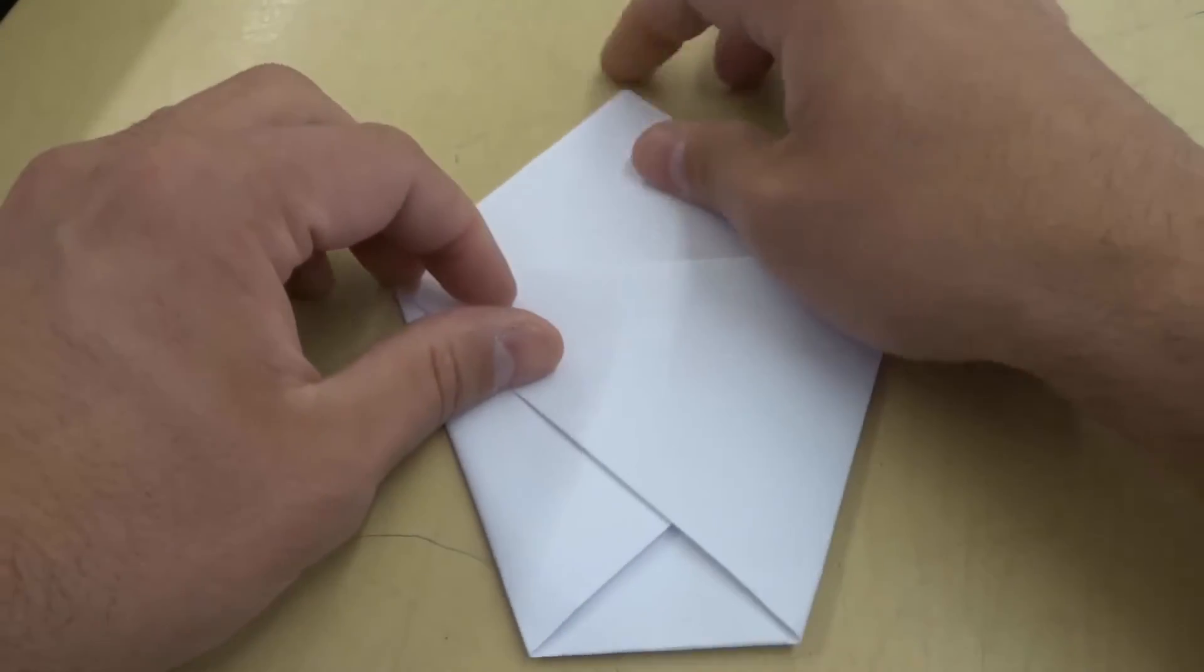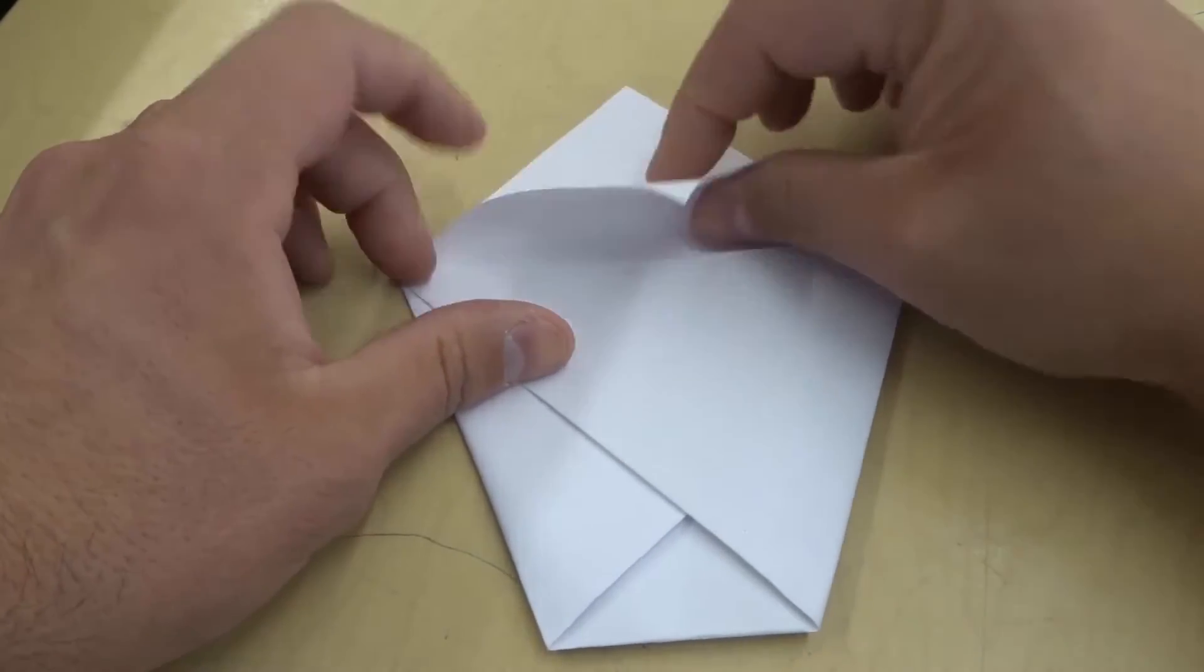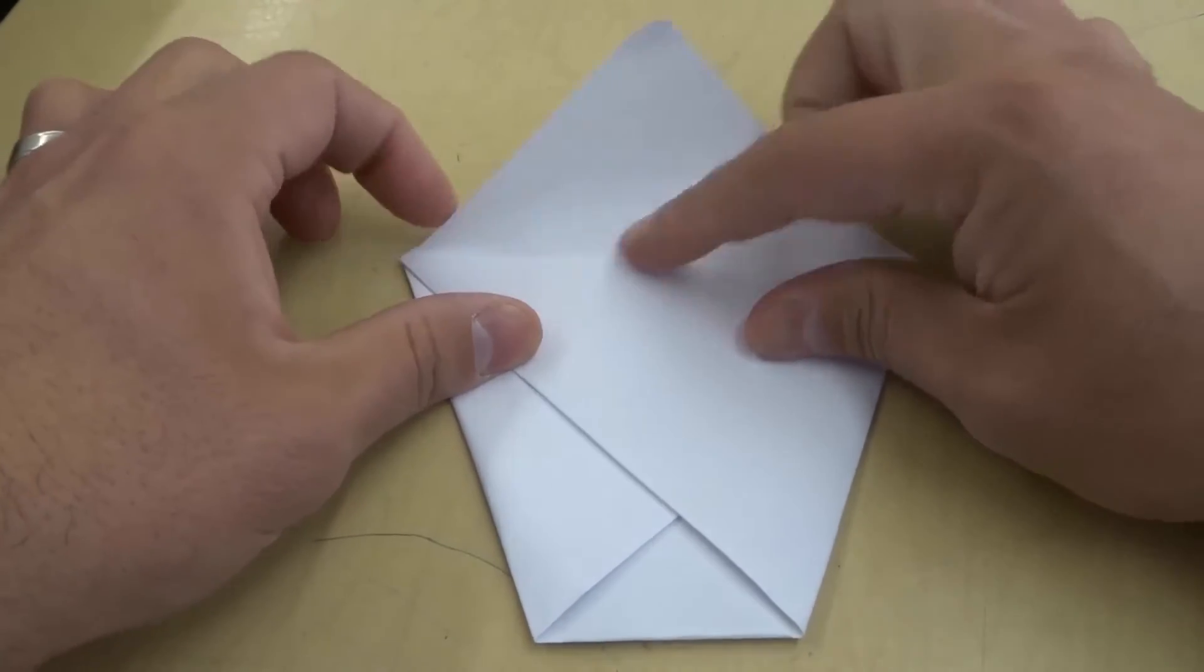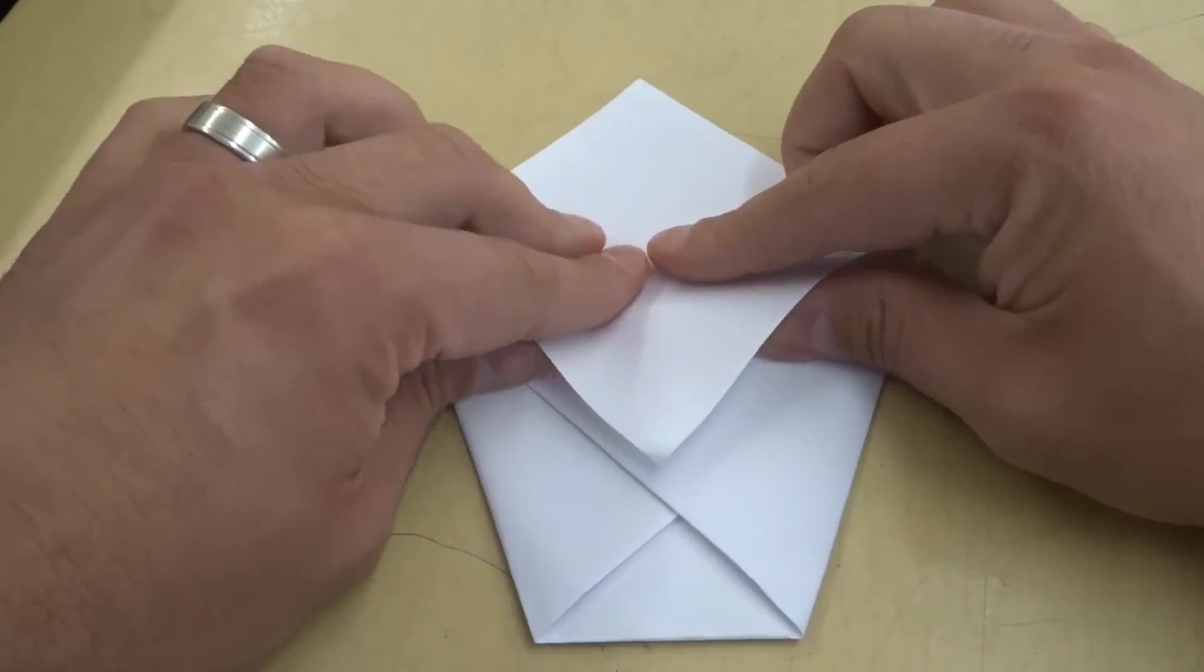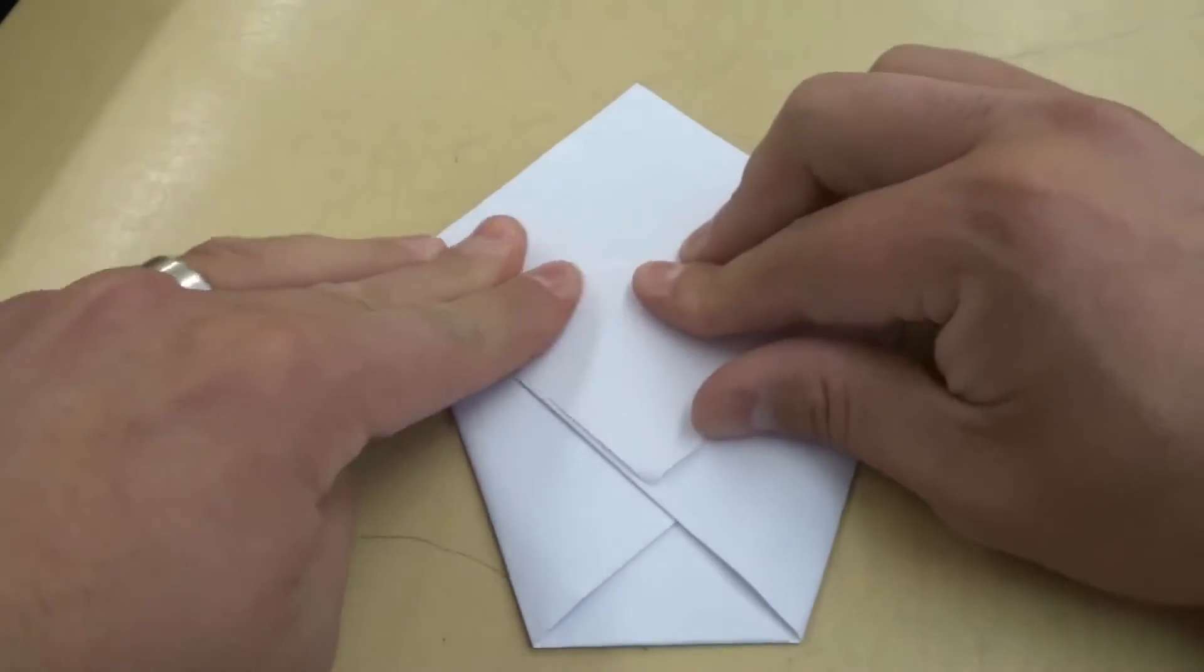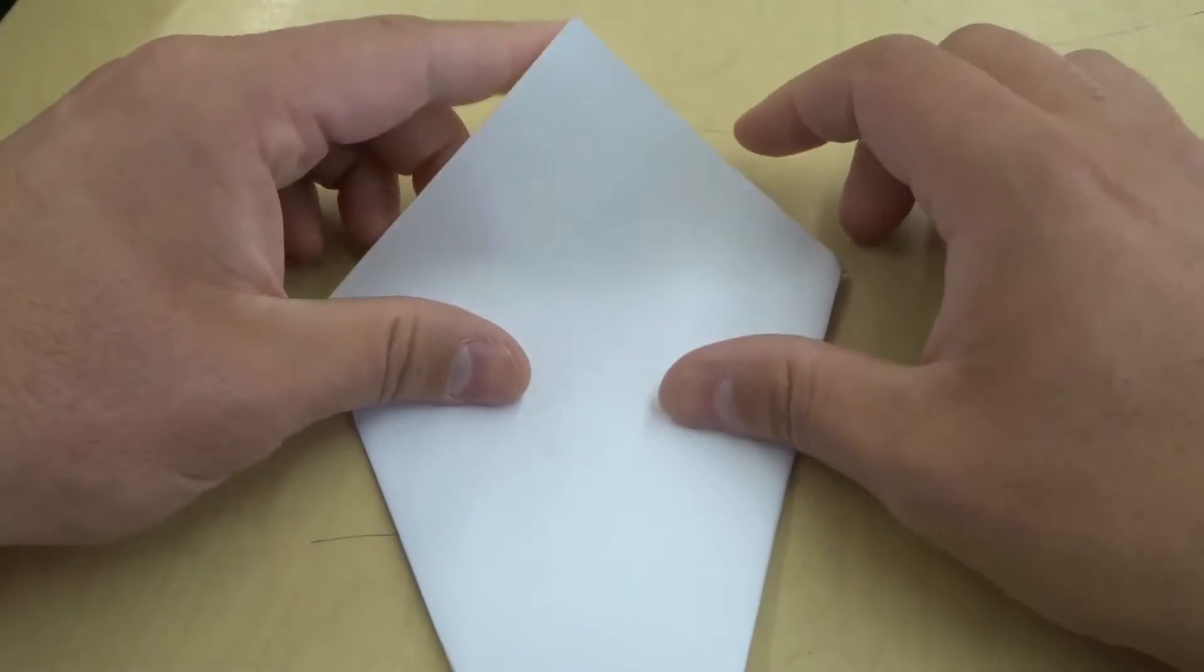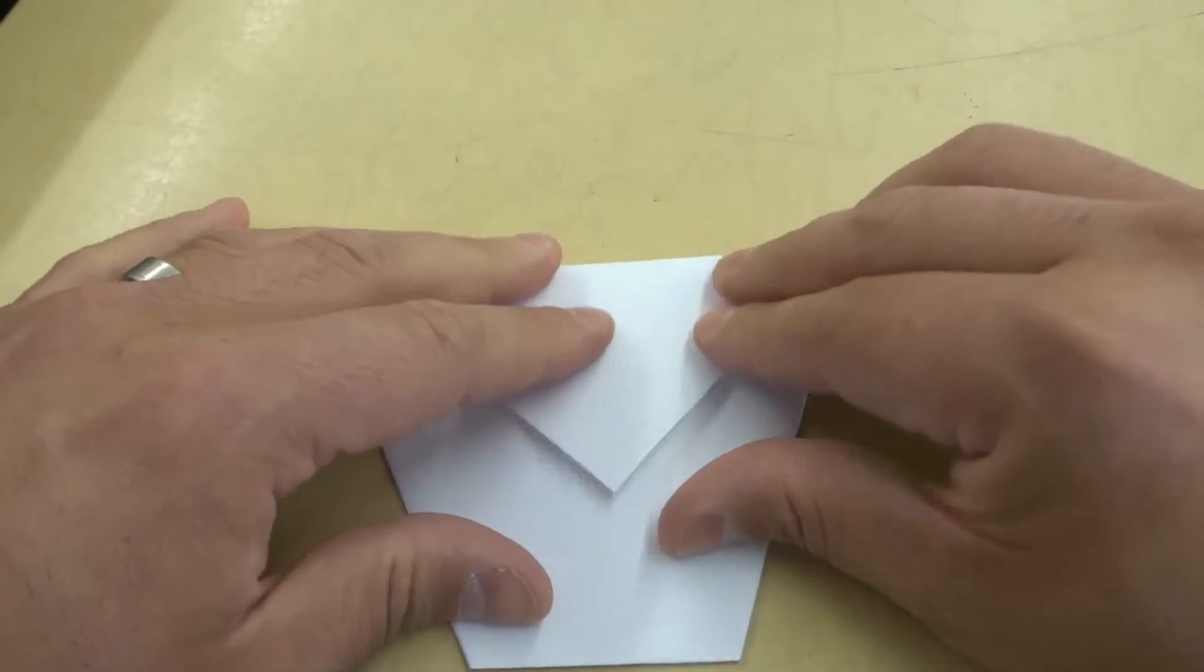Okay now at the top we have these flaps here. I'm gonna take one of the two flaps and fold it down over this line that you see right here. Just a nice crease like that. Then we're gonna flip it over and fold this flap down just like that.